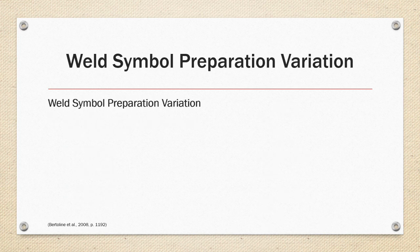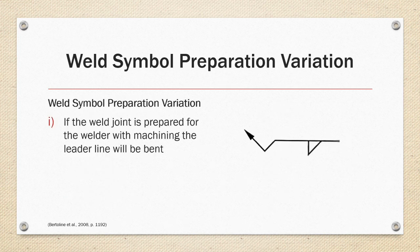Weld symbol preparation variation: if the weld joint is prepared for the welder with machining, the leader line will be bent. As shown on the right, the bent leader line indicates that a bevel will be machined on the edge referenced by the arrow.